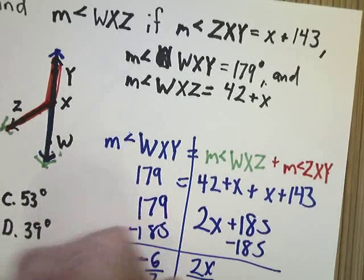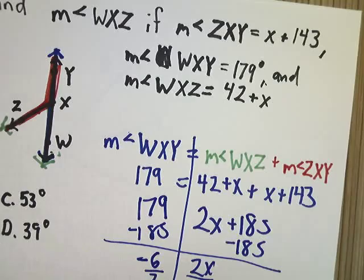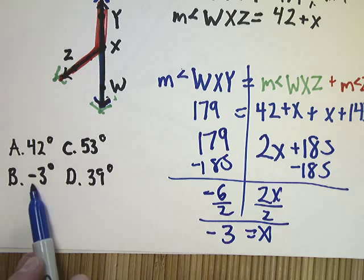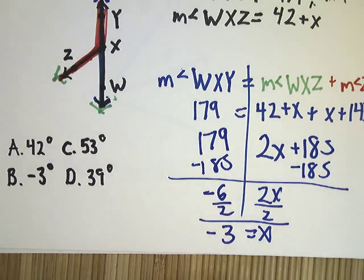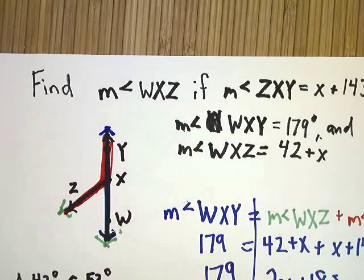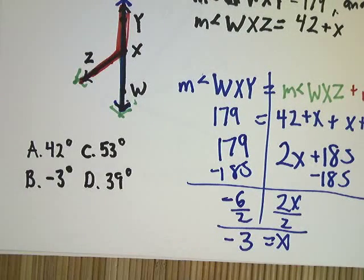And I divide by 2 here. And X equals negative 3. So, it's right here, right? If you look at the answer choices, it's right there. But that's not what the question asks. The question asks, what is the measurement of WXZ? That's the other problem that you kind of run into with most of these problems. It's not really that they're hard. It's just that they're kind of tricky.